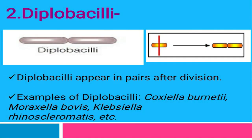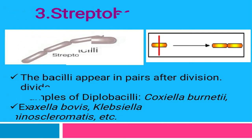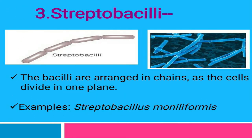The second arrangement is diplobacilli. In diplobacilli, the bacillus cell divides and produces two daughter cells that exist in pairs. Examples of diplobacilli are Coxiella burnetii, Moraxella bovis, and Klebsiella rhinoscleromatis.